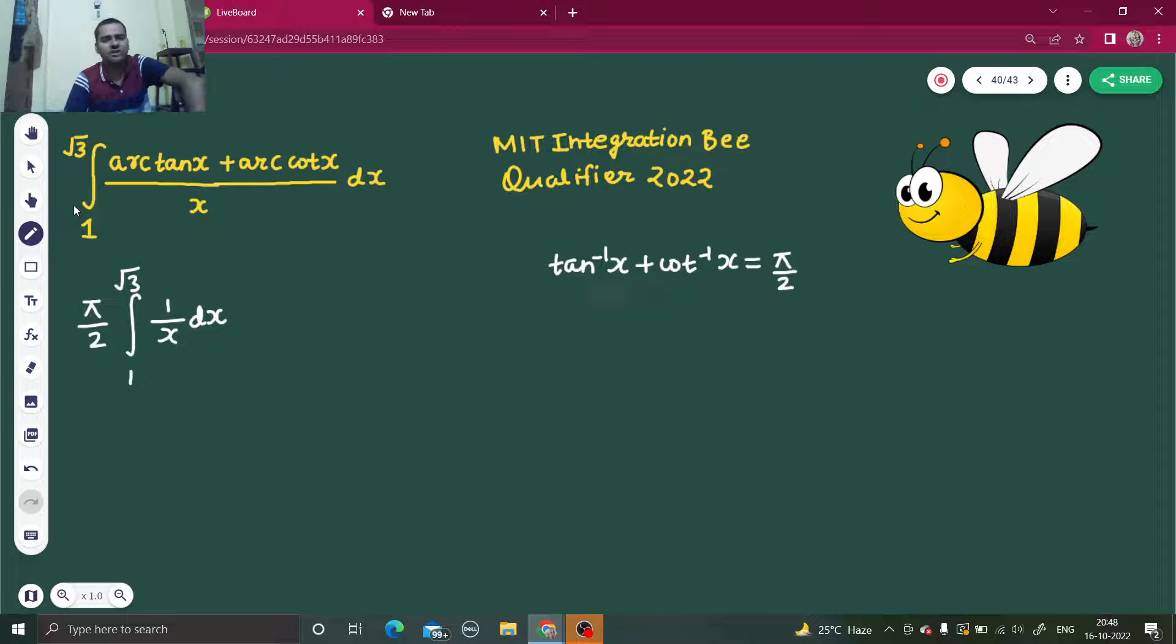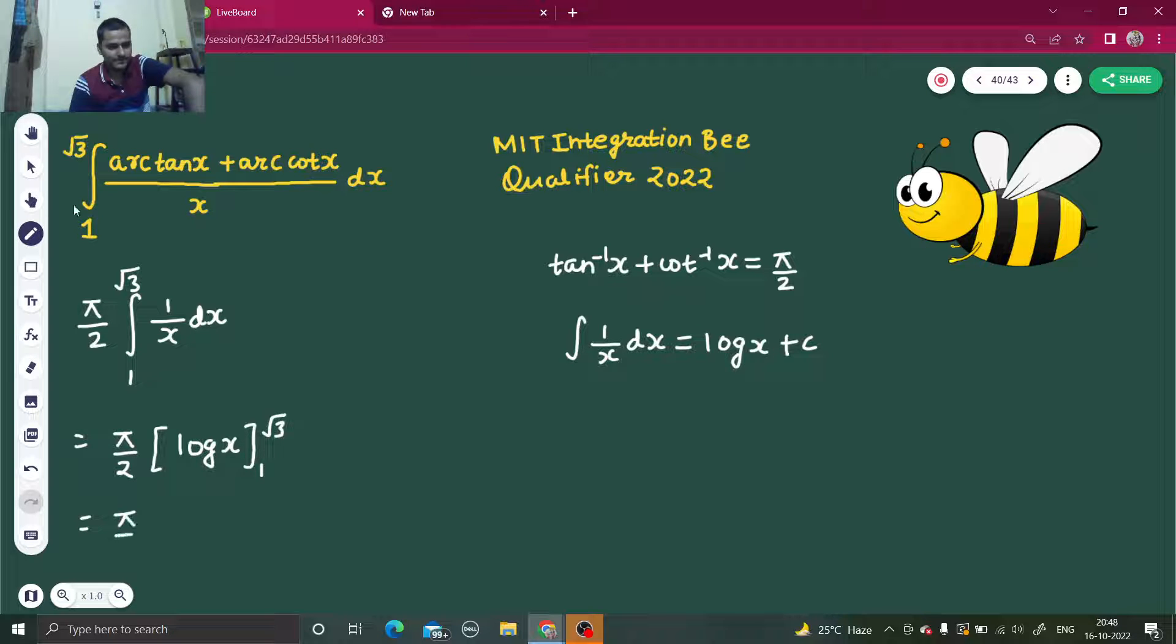We know that integral of 1 upon x dx is log x plus a constant c. So this will be pi by 2 times log x from 1 to root 3.